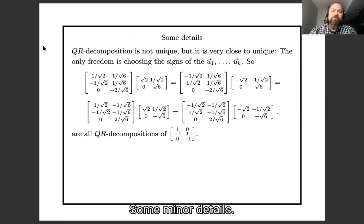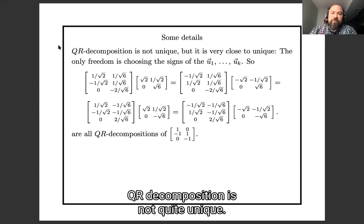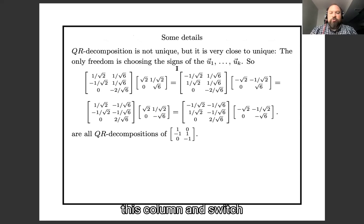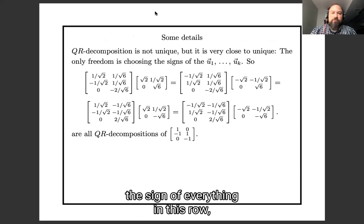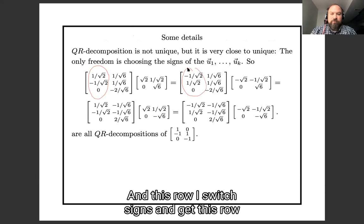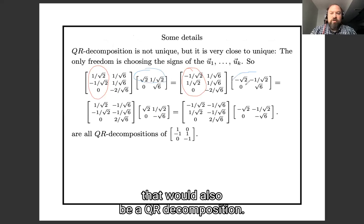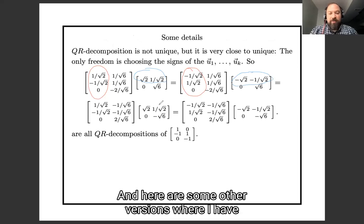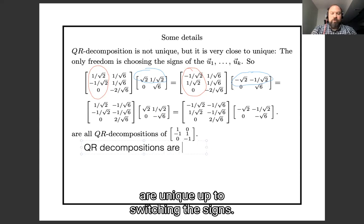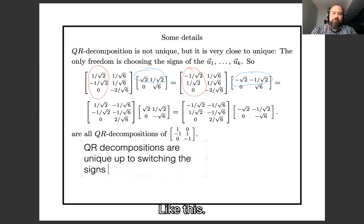Some minor details. QR decomposition is not quite unique. If I were to switch the sign of everything in this column, and switch the sign of everything in this row, so this column, I switch signs and get this column, and this row, I switch signs and get this row, that would also be a QR decomposition. And here are some other versions where I've switched signs in other places. But that's the only freedom.